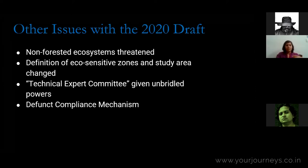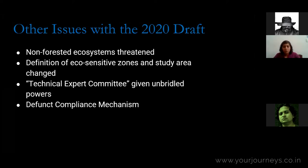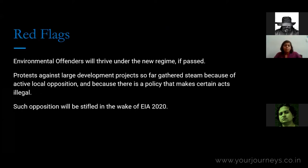The Technical Expert Committee looks, on the face of it, like it can be used to further dilute the EIA notification. Finally, there is a defunct compliance mechanism: under the 2006 notification, compliance reports were submitted to the EAC every six months, but this has been changed to annual reports, with no site visits required by MoEF officers. An environmental clearance is only revoked if a project has not submitted a compliance report for three years — and three years is a long time to wreak havoc, as we can see today with what's happening in Baghjan and the Dibru-Saikhowa National Park.